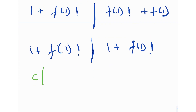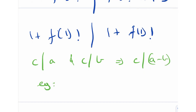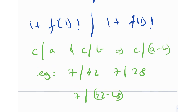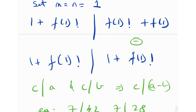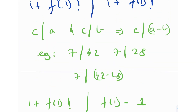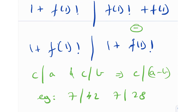We know that if c divides a number a and c divides a number b, then c divides the difference a − b. For example, 7 divides 42 and 7 divides 28, which implies 7 divides 42 − 28 = 14. So basically, I'm going to take the difference of these two quantities on the right-hand side, and I get (1 + f(1))! dividing f(1) − 1.